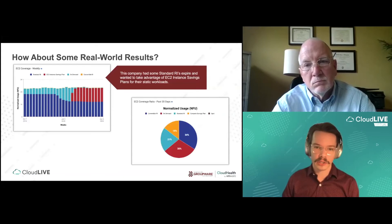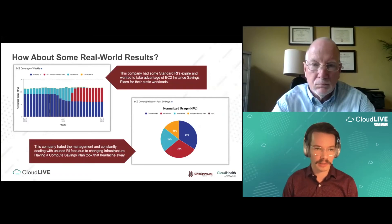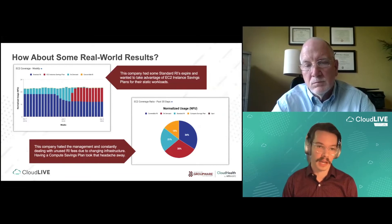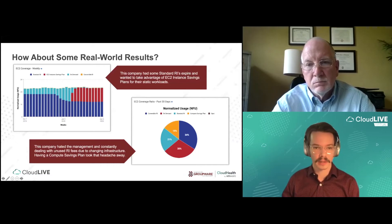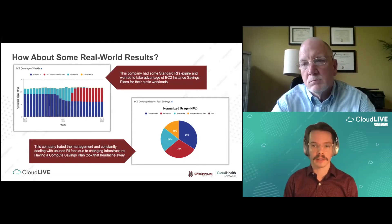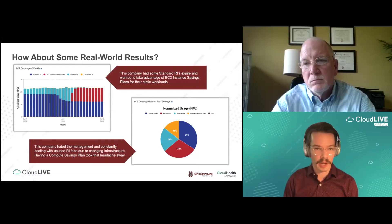On the flip side, here's a customer who was very frustrated with standard RIs. They had three different engineering groups who didn't always communicate well, and they were always getting hit with unused RI fees — causing headache for their AP department with extra $2,000 charges they shouldn't have incurred. We talked to them about compute savings plans because about 45% of their environment was running on-demand. We purchased a compute savings plan to cover an additional 15%, alleviating the stress of running so much on-demand and removing the worry about unused RIs. They plan on purchasing more savings plans once their standard RIs expire.